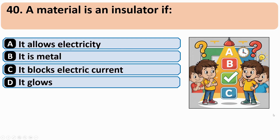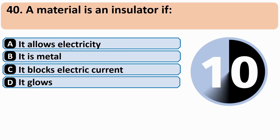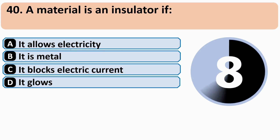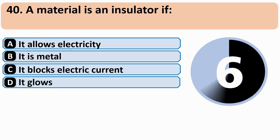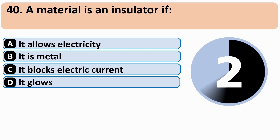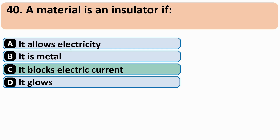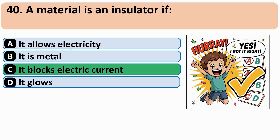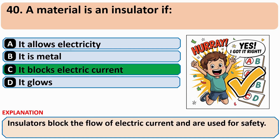A material is an insulator if: the correct answer is C: It blocks electric current.